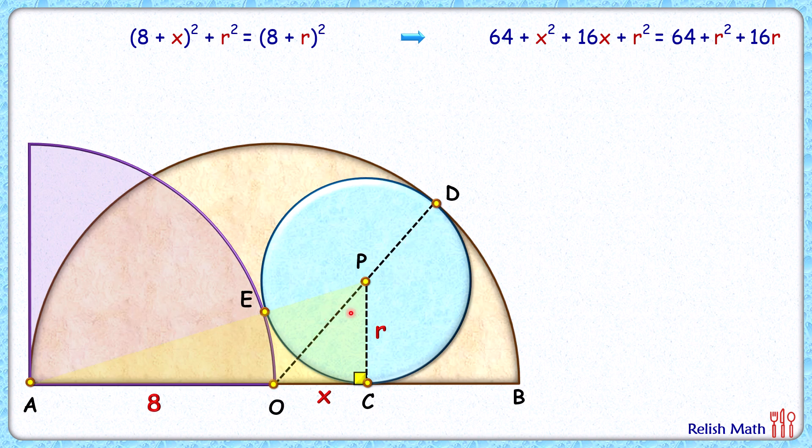Now here, the length PO we are not aware of, but PD length is r centimeters, and OD length is the radius of the semicircle, that is 8 centimeters. So PO length will be the full length 8 minus r. Now in this right angle triangle, that is triangle PCO, this pink triangle, applying Pythagoras theorem, we'll get r² + x² = (8 - r)².